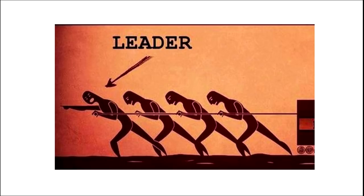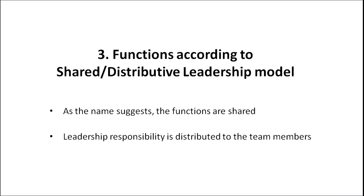Now moving on to the next topic. Looking at the image: an arrow is pointing towards the leader; they are pulling a workload and all are equally involved, including the leader. The work is being shared by all. This is the shared and Distributive Leadership Model, where the functions are shared between teachers, colleagues and subordinates with the leader. As the name suggests, the functions are distributed and the leadership responsibility is given to team members.